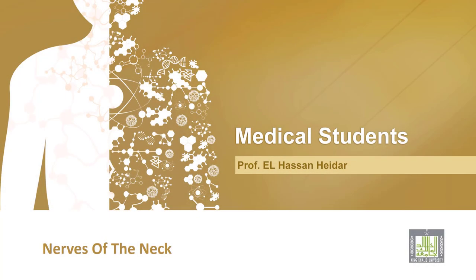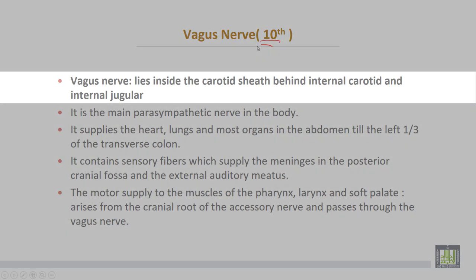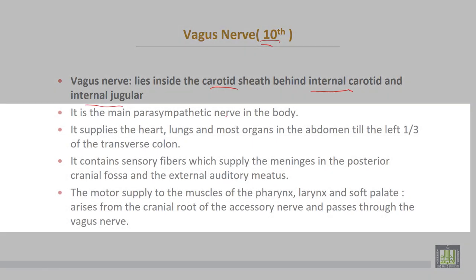Starting with the nerves of the neck, the vagus nerve is the tenth cranial nerve. It lies inside the carotid sheath behind the internal carotid artery and internal jugular vein. It is the main parasympathetic nerve in the body, supplying the heart, lungs, and most organs in the abdomen till the left third of the transverse colon. It contains sensory fibers supplying the meninges in the posterior cranial fossa and the external auditory meatus. The motor supply to the muscles of the pharynx, larynx, and soft palate arises from the cranial root of the accessory nerve but comes through the vagus nerve.